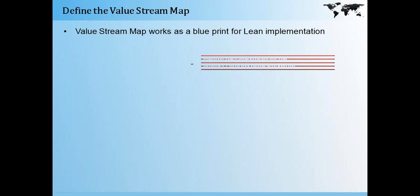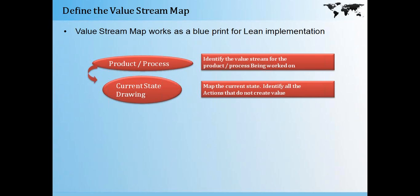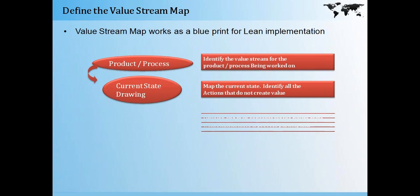The value stream map works as a blueprint for a lean implementation. There are four steps in creating the value stream map. The first step is identifying the value stream for the product being worked on — you need to identify which product or process you would like to work on. Then for that product or process, you create a current state drawing, mapping the current state, identifying all the actions that do not create value, and prioritizing which are the value-adding activities to make them more efficient.